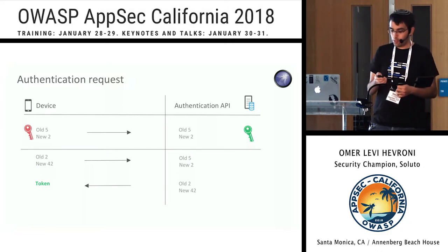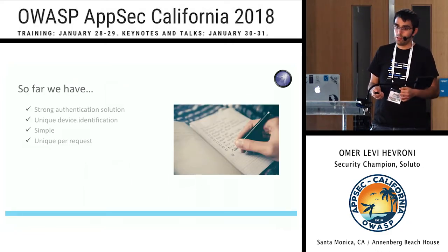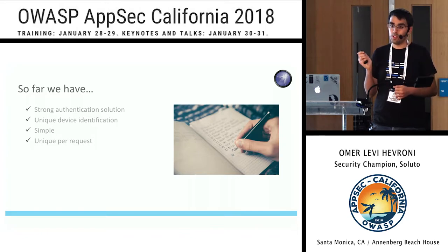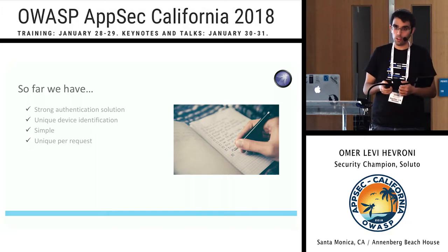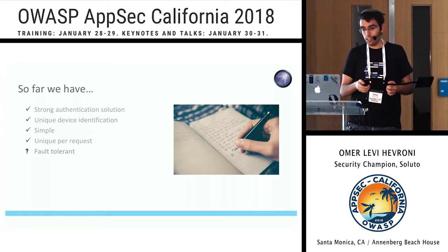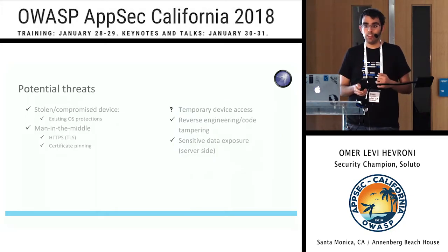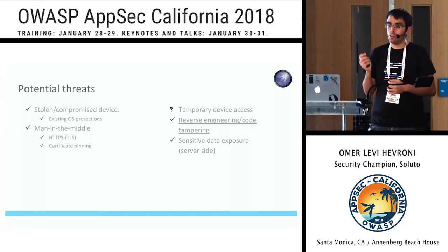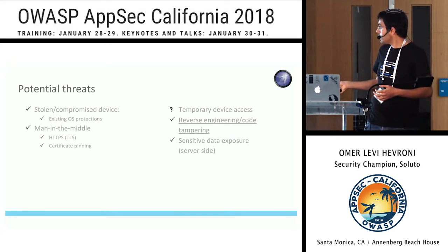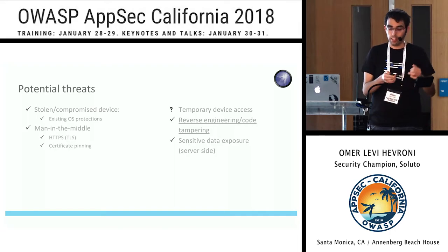This gives us unique per request - because before each request, the device rolls, so the same payload will not work again. It also gives us fault tolerance, which I'll show in a moment. Returning to the threat list: I'm not storing anything hard-coded in the code, so there is no reverse engineering threat. We're only left with temporary device access, which I'll cover in the next section.